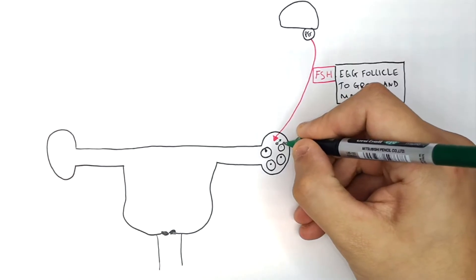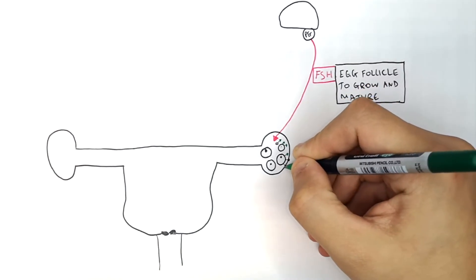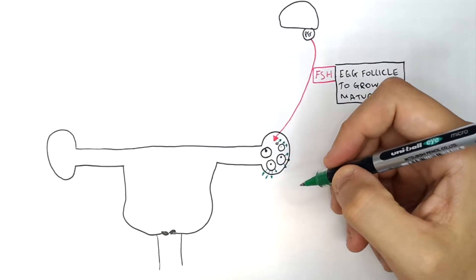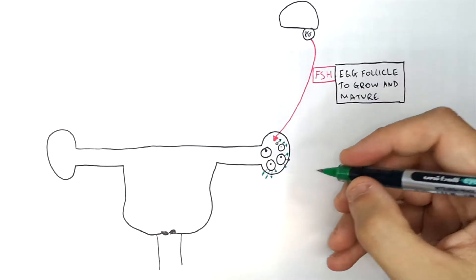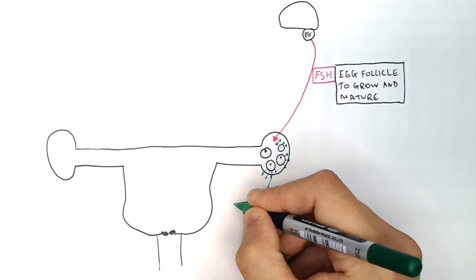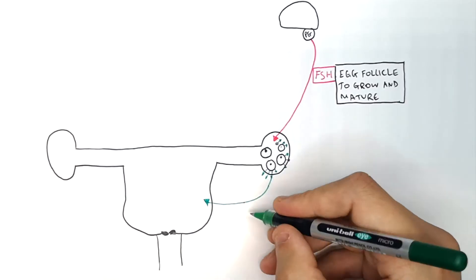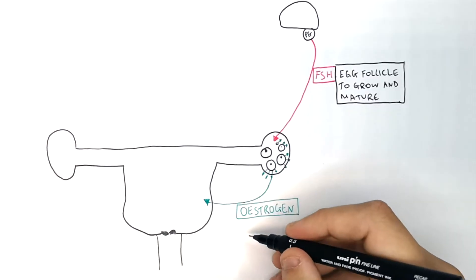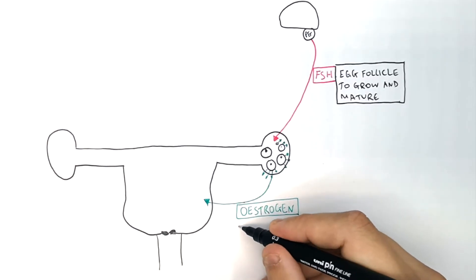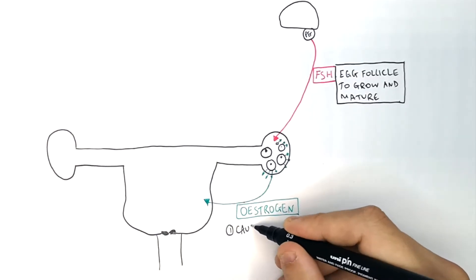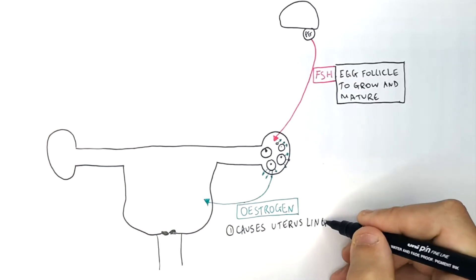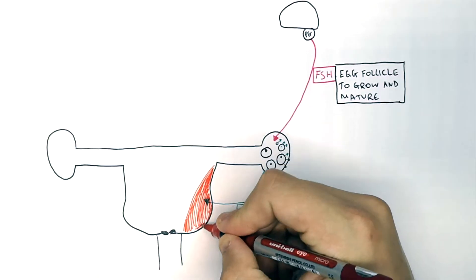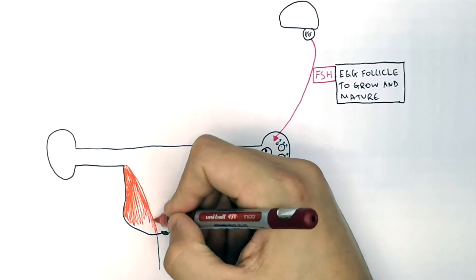Next, the egg follicles start to produce estrogen. The green lines show estrogen being secreted by the egg follicle. Estrogen goes to the uterus, where it causes the uterus lining to thicken with blood.